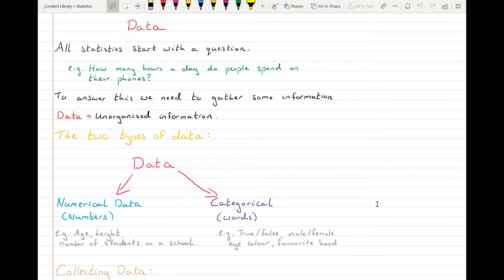And categorical data, which are words, like category words. You have maybe true or false questions, male or female, your eye color, your favorite band, all of those you're answering with words. So they would all be categorical types of data that you're collecting.